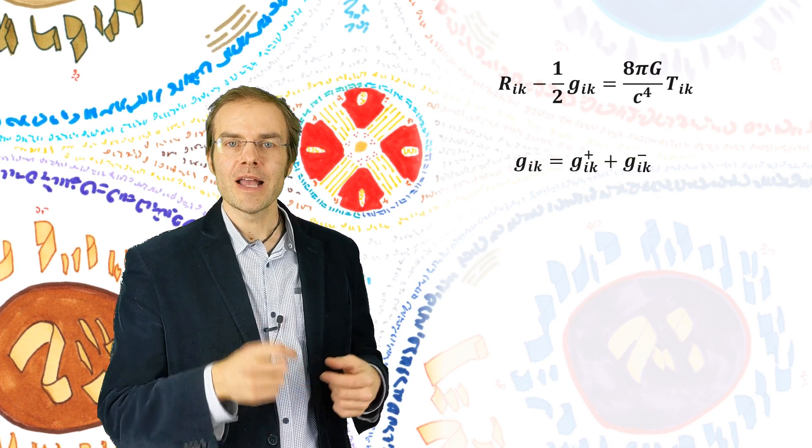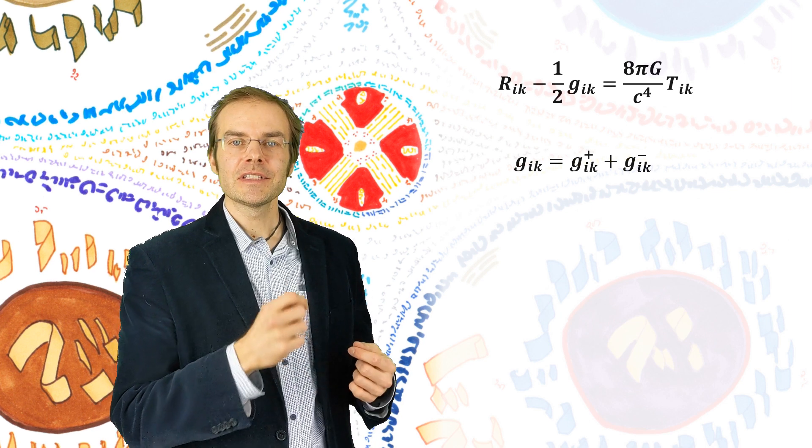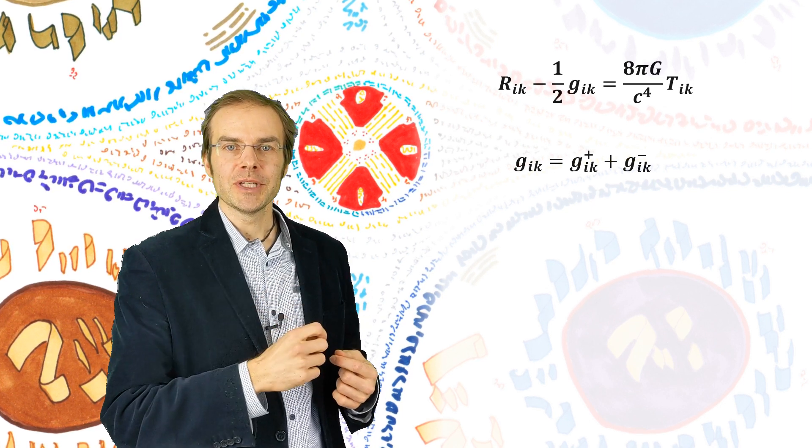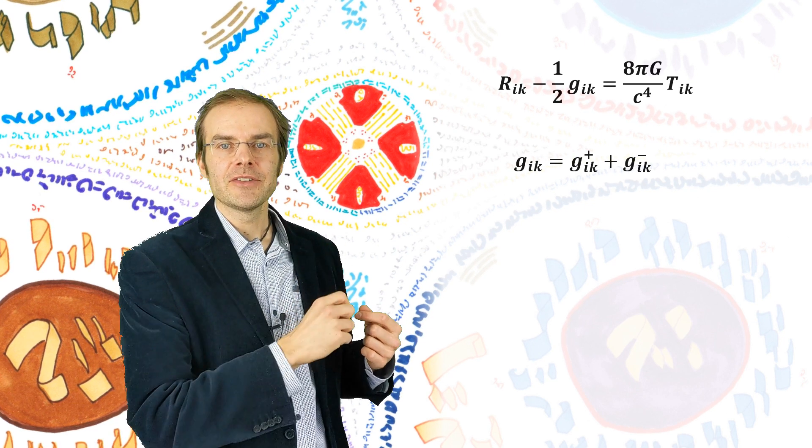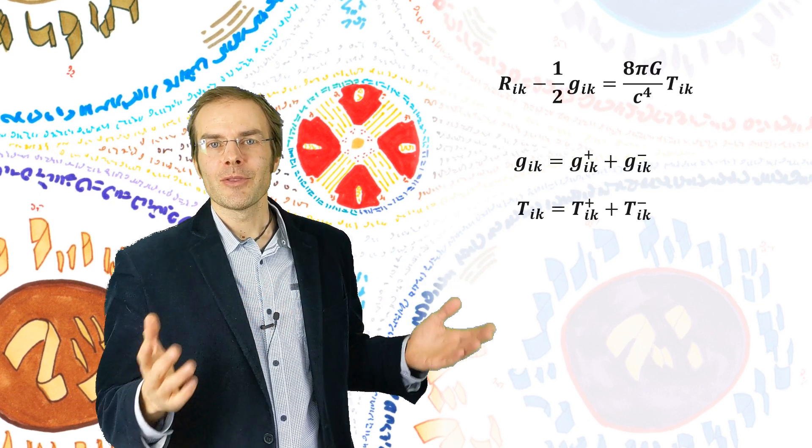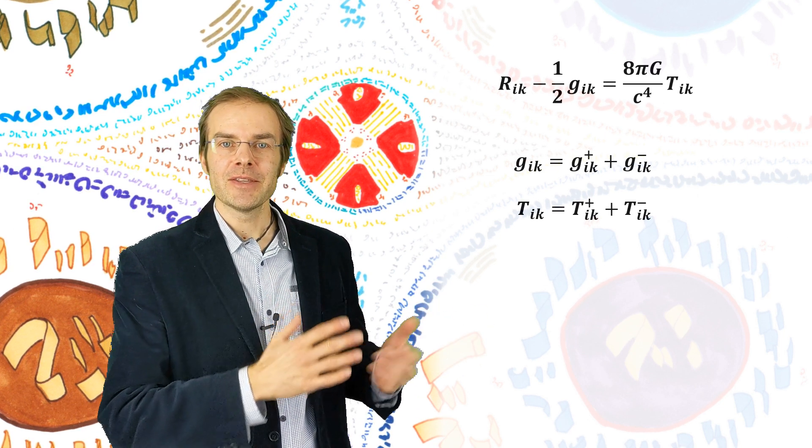If we now further assume, as Einstein did, that physical fields can be expressed through geometry, then we can assume the existence of a general energy tensor, which is in turn non-Hermitian, and can be split in the same manner.